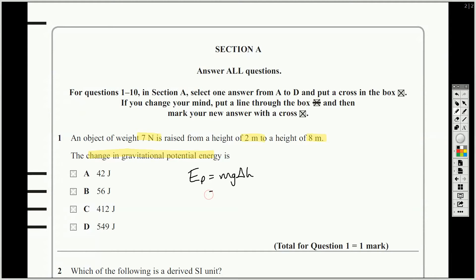So really this is just, can you work out a change in, can you recognise that mg is actually the weight, which is 7 times 6. So 7 6's are 42. So the answer to this one is A. Make sure you just put a little cross in there.